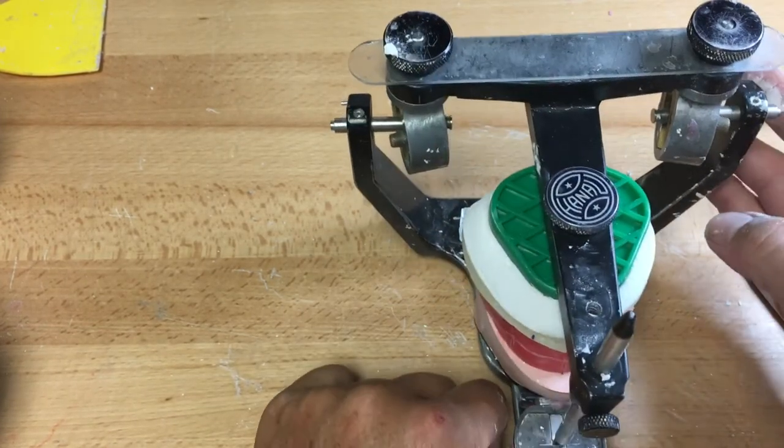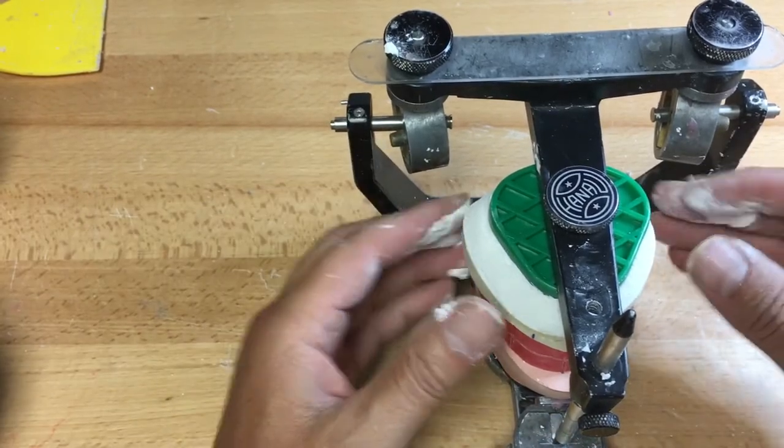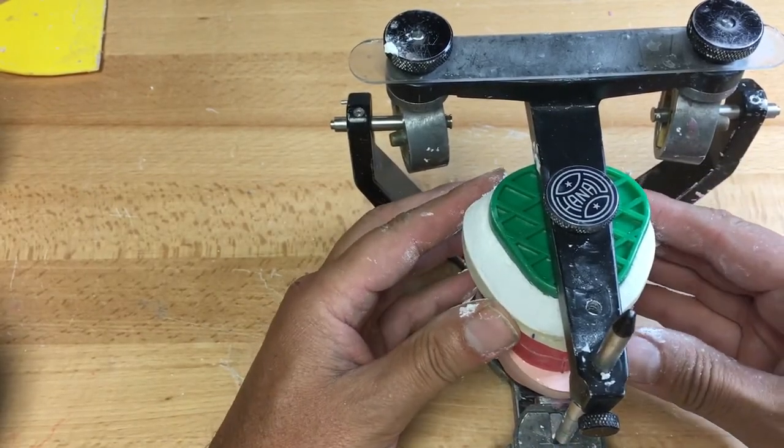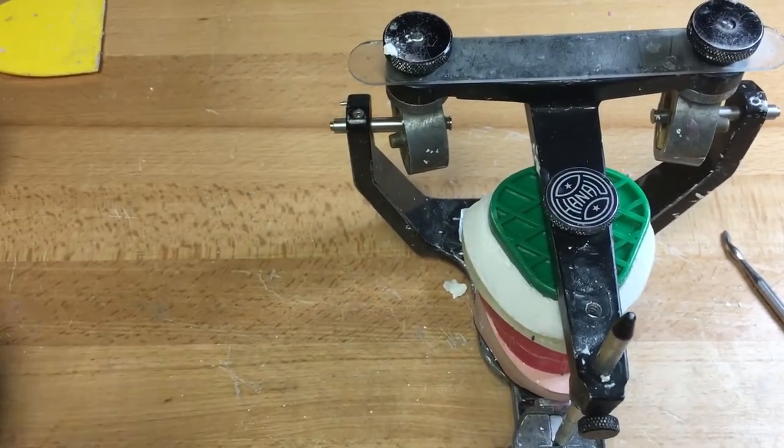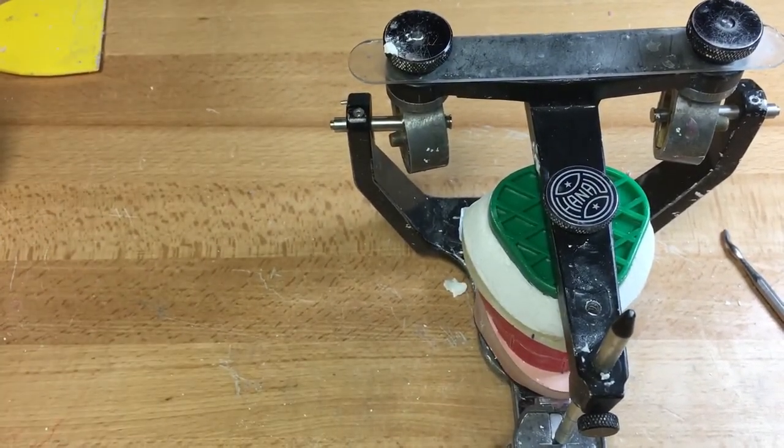So there you have it, the upper member mounting in Vaughn Wells Triangle, average value mounting on the semi-adjustable articulator.